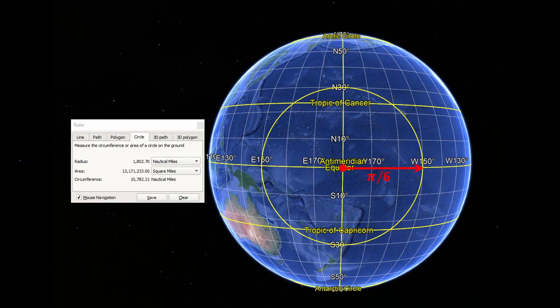Here's a screenshot from Google Earth. I've drawn a circle that's a little over 1800 miles in radius—that's π/6 in terms of radians. So spherical pi would be π sin(π/6) divided by π/6, giving spherical pi a value of 3.0 for this circle.